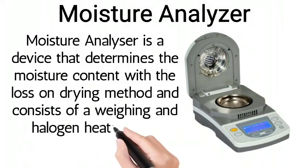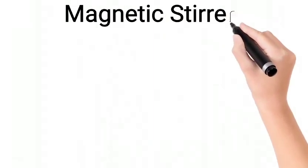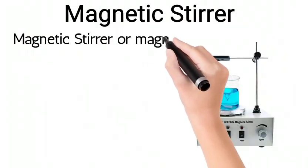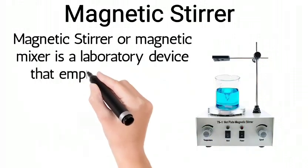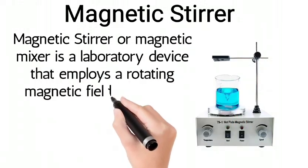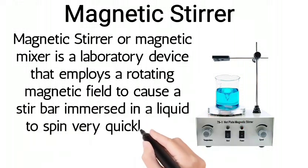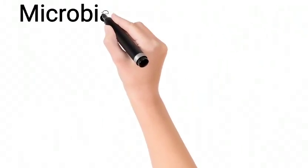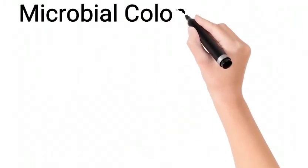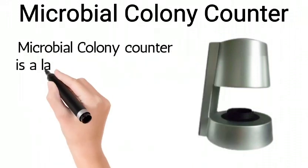The moisture analyzer consists of a weighing and halogen heating unit. Magnetic stirrer: a laboratory device that employs a rotating magnetic field to cause a stir bar immersed in a liquid to spin very quickly, thus stirring it.